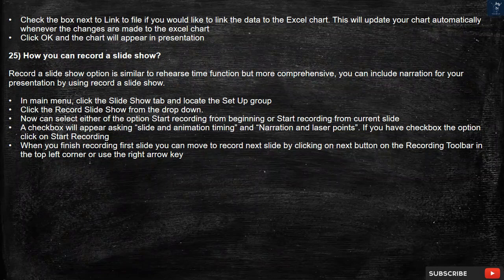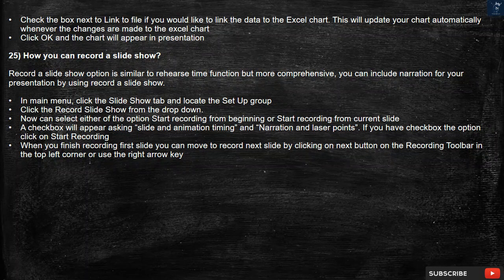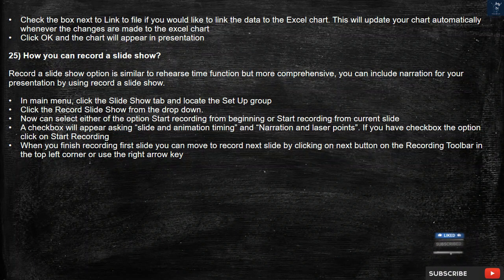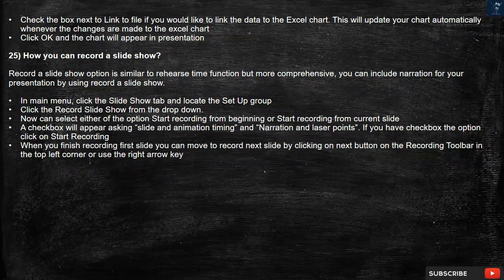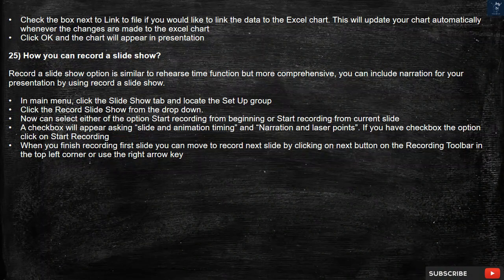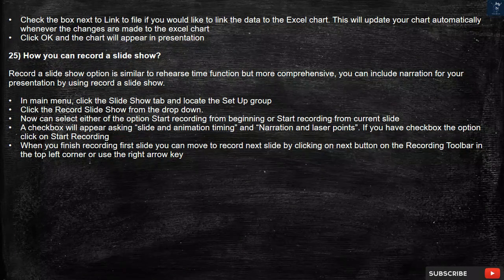Question 25: How can you record a slideshow? The Record a Slideshow option is similar to the Rehearse Timing function but more comprehensive — you can include narration for your presentation. In the main menu, click the Slideshow tab and locate the Setup group. Click Record Slideshow from the drop-down. You can select either Start Recording from Beginning or Start Recording from Current Slide. A checkbox will appear for slide and animation timing and narration and laser pointer. If you have checked those options, click Start Recording. When you finish recording the first slide, move to the next slide by clicking the Next button on the recording toolbar or use the right arrow key.